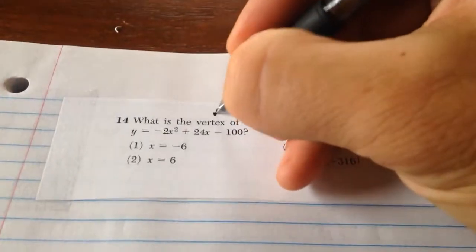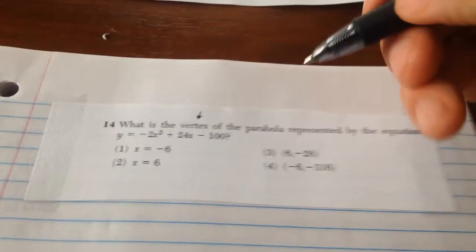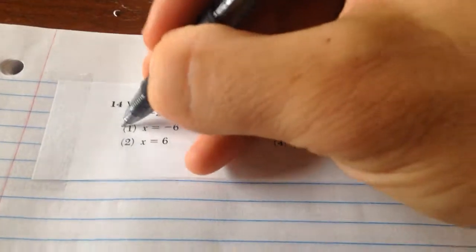First and foremost, the vertex is a point. So the only two choices we have are choices 3 and 4. Choices 1 and 2 are equations for the axis of symmetry.